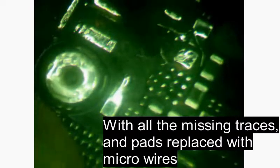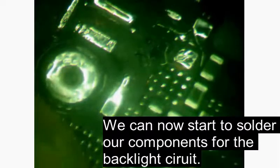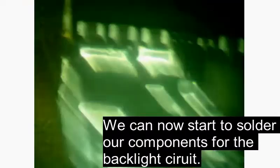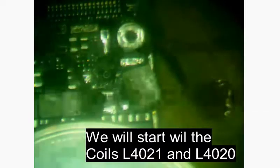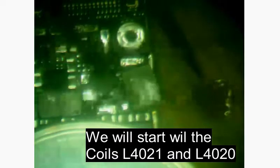And now with all the missing traces and pads replaced with microwires, we can now start to solder our new components back on the backlight circuit. We're going to start with the coils L4021 and L4020.